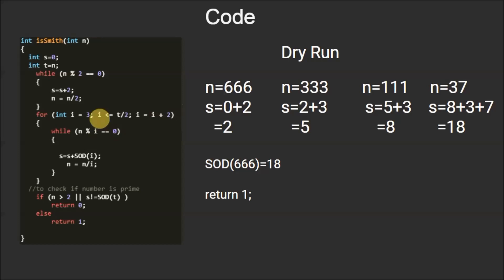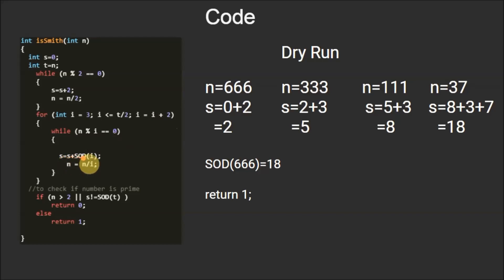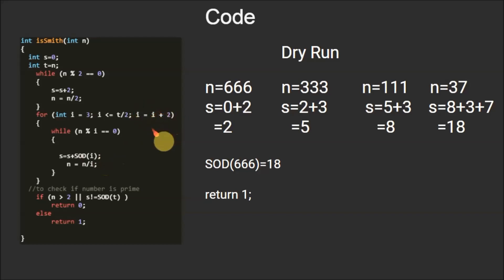Then we have a for loop starting from 3, going up to t divided by 2, with i incremented by i plus 2. Within this loop we have another while loop with the condition n mod i equals 0. Inside, we update s by s plus the sum of digits of i, passing i to the `sod` function which returns the sum of digits of i, then updating n to n divided by i. This for loop generates all prime factors of n other than 2, and we increment i by 2 since prime factors can only be odd.